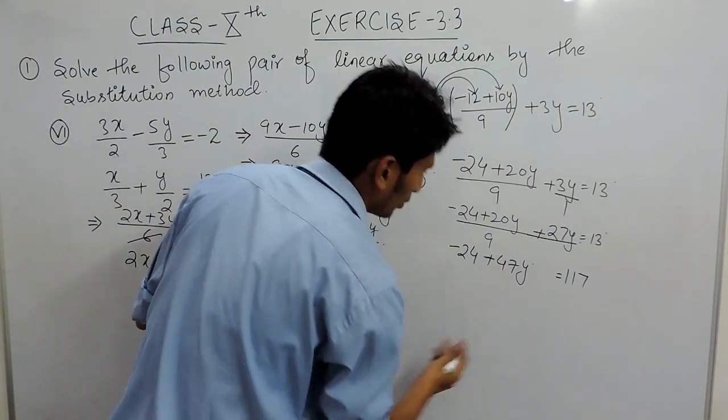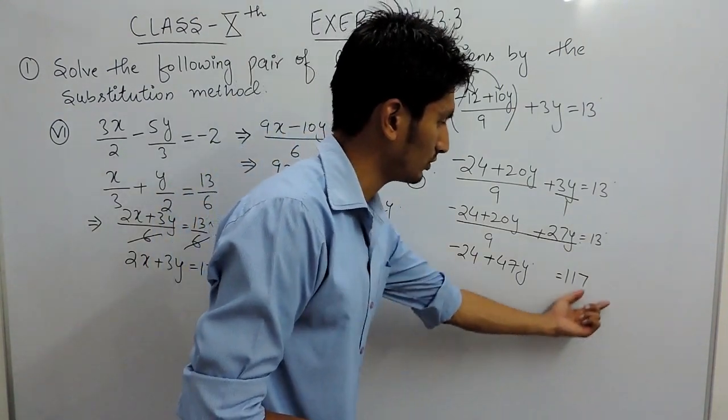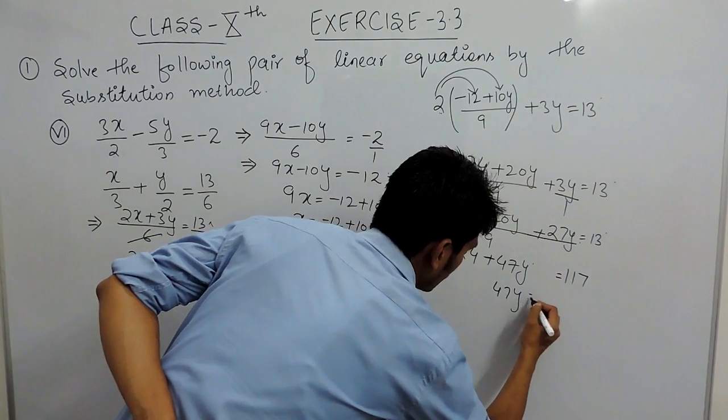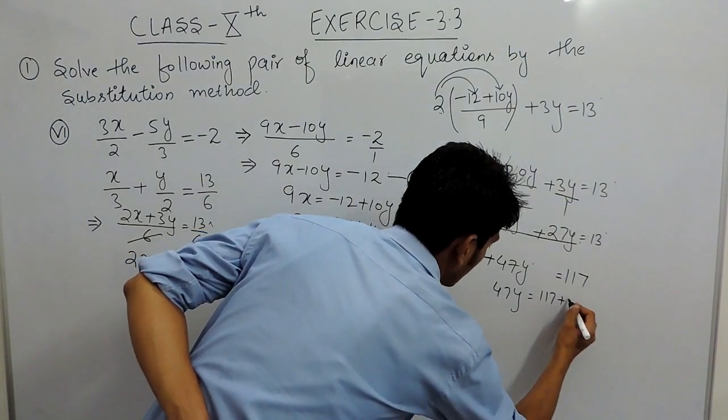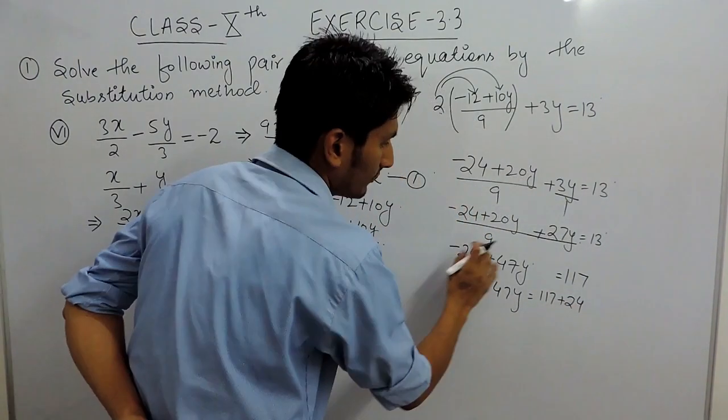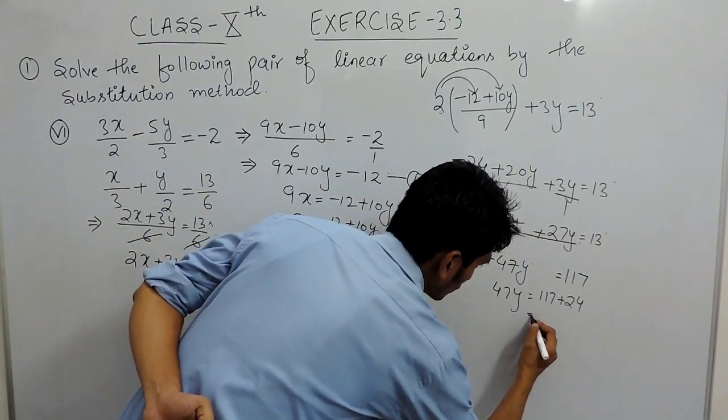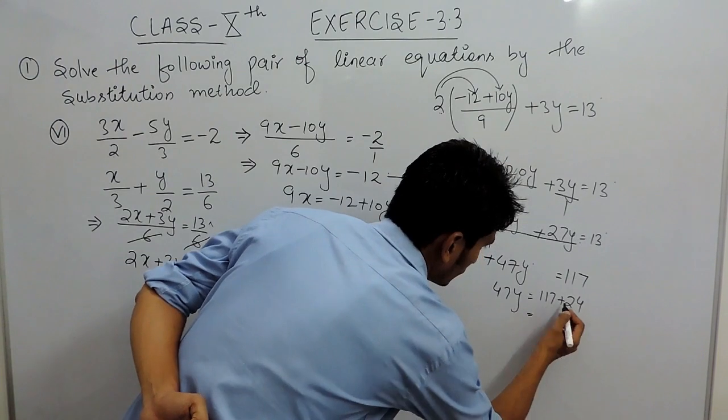47y. So we can simply shift this to that side, so the equation becomes 47y equals to 117, and negative 24 when shifted to that side will become positive 24, so 7 plus 4 is 11, 2 plus 1 is 3, 1 carry 4, 4 and 1.